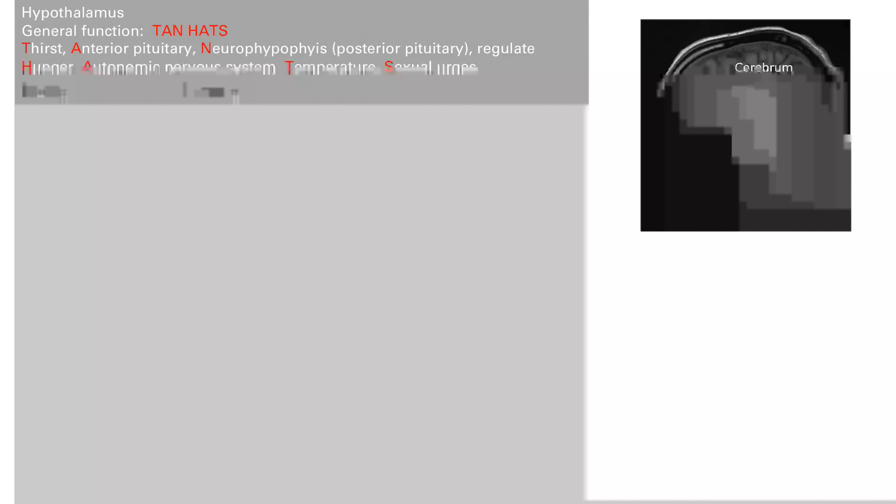We finished talking about brain cells and the cerebral cortex with all its higher functions. Now we're going to go into the deeper brain and talk about the hypothalamus. This is a super important part of the brain with tons of functions. First of all, there's a nice mnemonic for all these functions, that is TANHATS.